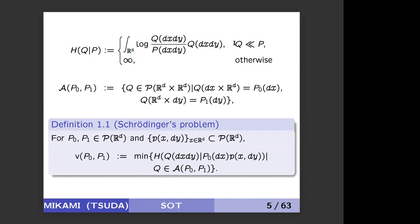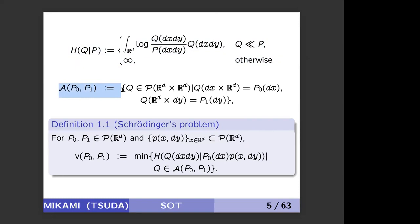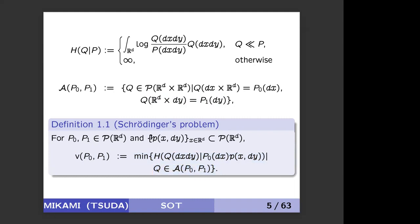If q is absolutely continuous with respect to p, then this is the definition of relative entropy. We define the set of admissible probability measures on R^d times R^d which have first marginal p_0 and second marginal p_1. Then Schrödinger's program can be written as: minimization of the relative entropy under this constraint, where p(x, dy) is a probability measure for each x. This is a minimization program of relative entropy over probability measures satisfying this constraint.